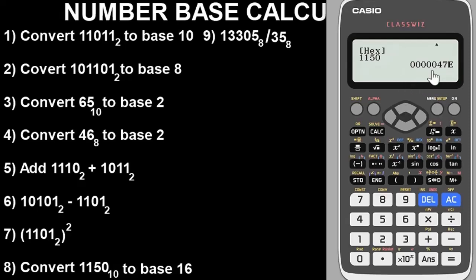Now, to bring you back to base 10 from hexadecimal, press the Decimal button. This will return the value to 1150 base 10. That's how simple it is to convert between decimal and hexadecimal.